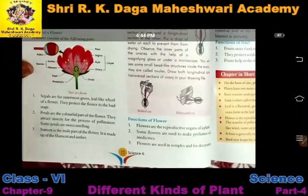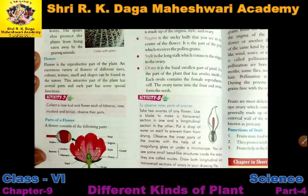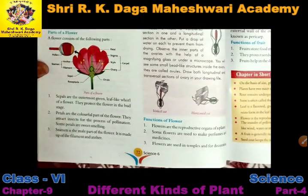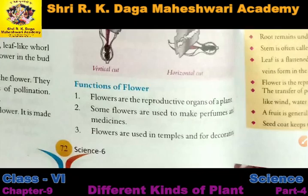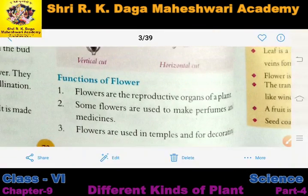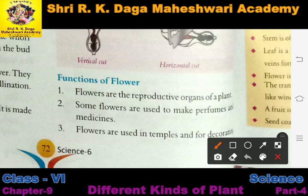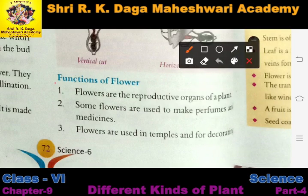How does a flower help in the overall growth of the plant? The most important thing is that the flower is the reproductive part of the plant. Without flowers, reproduction in plants would not be possible, because the process of pollination is possible only because of flowers. Flowers attract insects for the process of pollination, so they are the most important part of the plant.